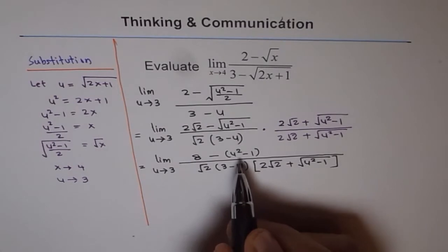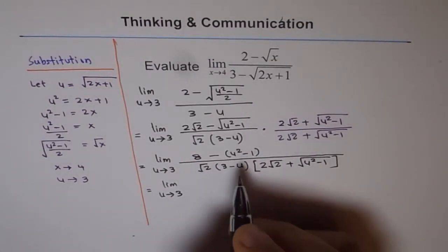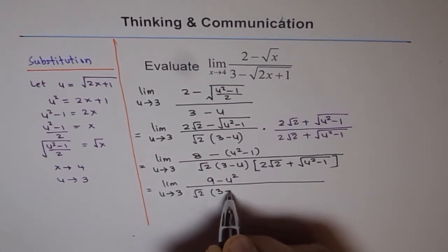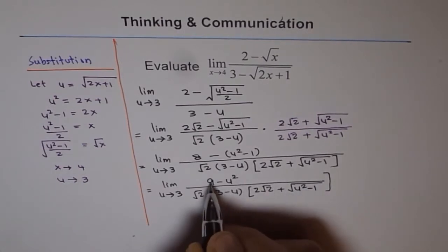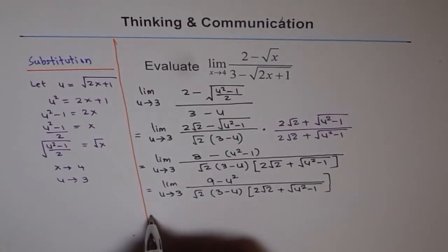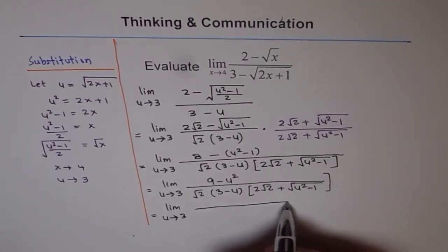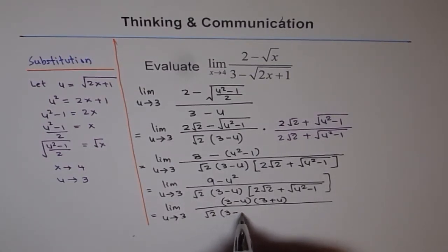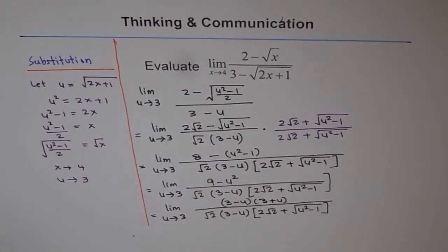Opening the bracket in the numerator: 8 minus minus 1 gives us 9, so the numerator becomes 9 minus u squared. Now 9 minus u squared gives the factor (3 minus u), since 9 minus u squared equals (3 minus u)(3 plus u). After a great struggle we finally managed to get a factor that cancels with (3 minus u) in the denominator. We can now cancel 3 minus u and substitute u equals 3.